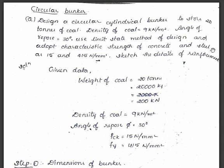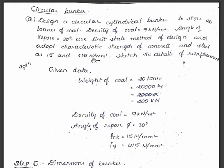In the previous video we saw the design guidelines for cylindrical bunkers. Let us now solve a problem. Design a circular cylindrical bunker to store 20 tons of coal. The density of coal is 9 kilonewton per meter cube, angle of repose is 30 degrees. Use the limit state method of design and adopt characteristic strength of concrete and steel as 15 and 415 newton per mm square respectively. Sketch the reinforcement details.